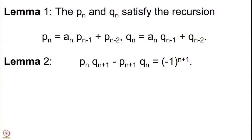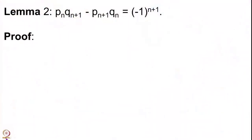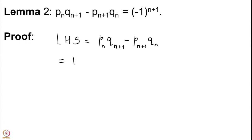We had proved lemma 4 and lemma 3 in the last lecture. Now we are going to prove lemma 2 using the recurrence relation. The recurrence says that p_n and q_n are obtained from the previous two pairs p_{n-1}, q_{n-1}, p_{n-2}, q_{n-2}, with the relation: the nth term equals a_n times the (n-1)th term plus the (n-2)th term.